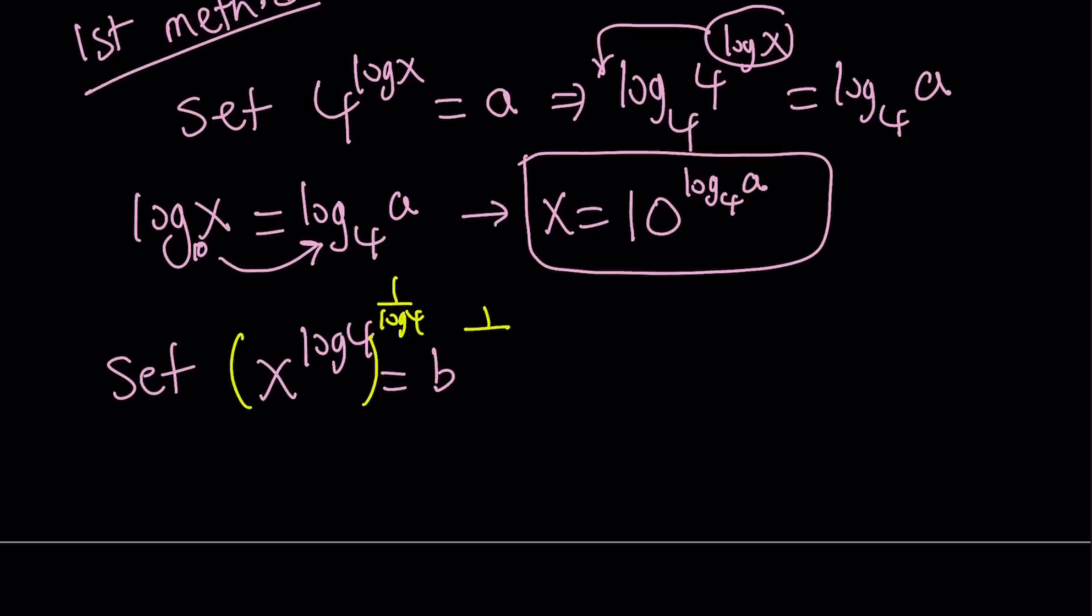So if you do that, the log 4 is going to cancel out. But you're going to end up with the following. Let's clean it up and rewrite it. x equals b to the power 1 over log 4. And this is base 10 log 4. Okay? Now we have two different expressions for x, but they mean the same thing. So let's go ahead and set them equal to each other.